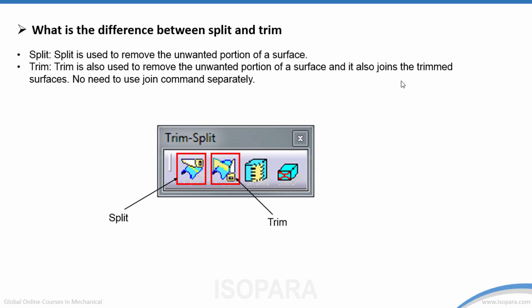What is the difference between Split and Trim? Split is used to divide one surface into two portions — equal or unequal — and you can remove one of those portions. In ideal terms, Split is just dividing, or you can say it is used to remove the unwanted portion of a surface.